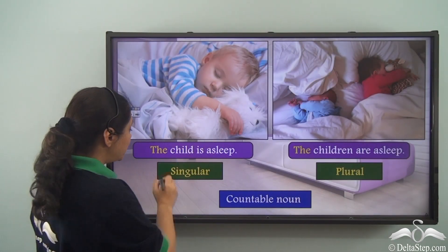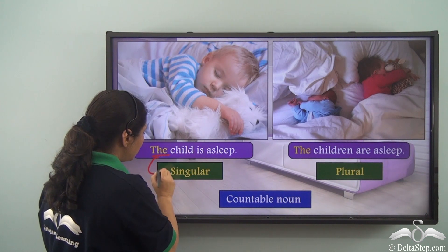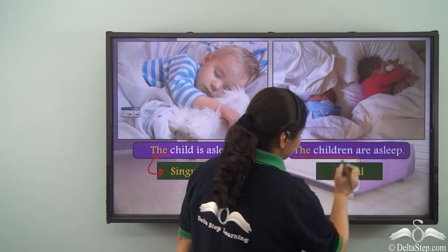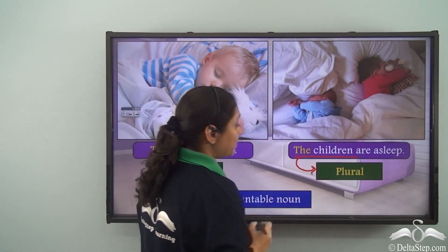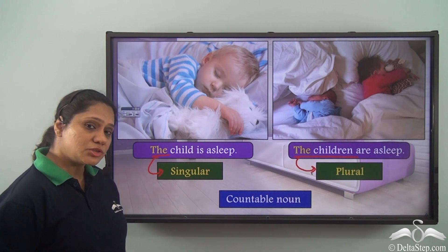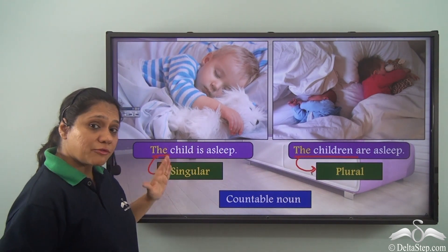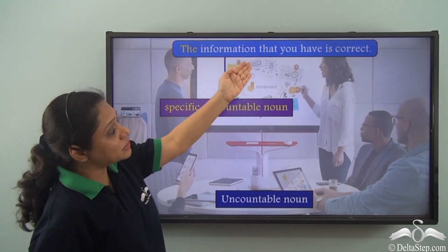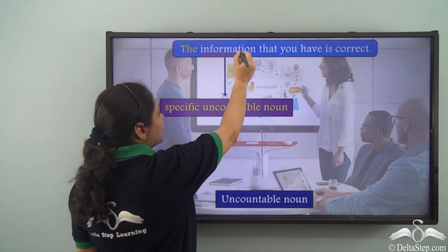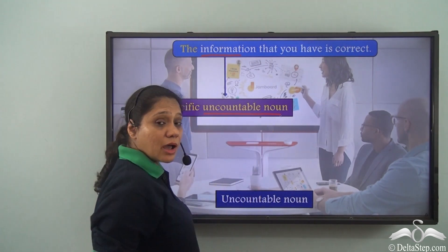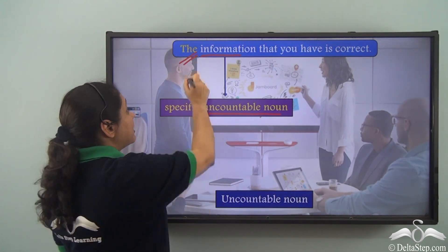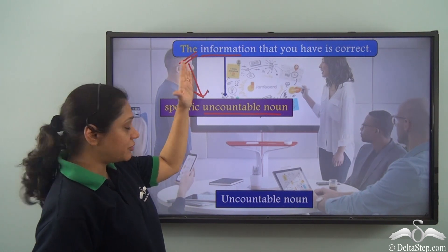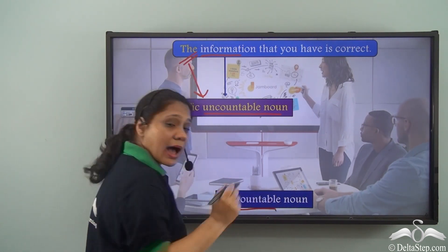'The child is asleep' — here, 'the' is referring to a particular singular noun. 'The children are asleep' — here, 'the' is referring to a particular plural noun. Here we see the use of 'the' with countable nouns. 'The information that you have is correct' — information is an uncountable noun, and when we use 'the,' we are referring to a specific uncountable noun.